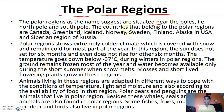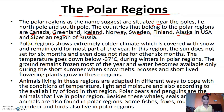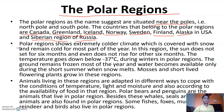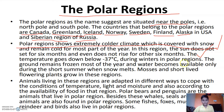The polar regions, as the name suggests, are situated near the poles — the North Pole and the South Pole. Countries that belong to the polar regions are Canada, Greenland, Iceland, Norway, Sudan, Finland, Alaska and USA, and the Siberian region of Russia. In Siberia, the Siberian crane is found.